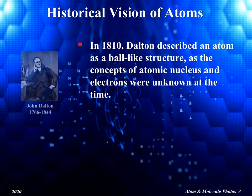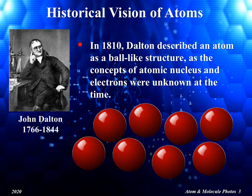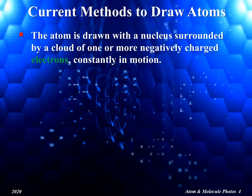It was not until the 19th century that a better understanding of atoms was developed. In 1810, John Dalton described an atom as a ball-like structure, as shown in the diagram. The concepts of atoms having a nucleus and electrons were unknown at that time. Currently, the atom is visualized as a nucleus surrounded by a cloud of one or more negatively charged electrons constantly in motion.